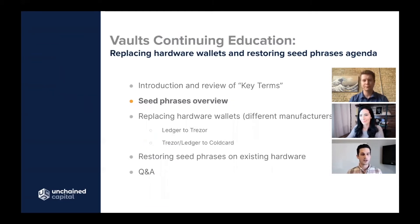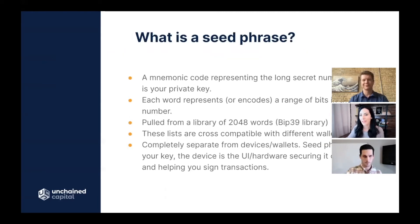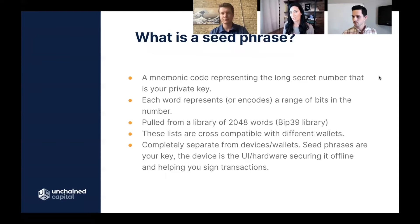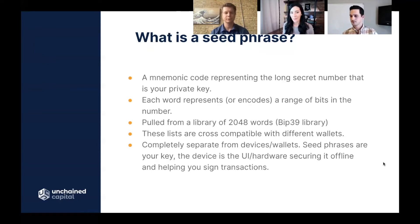Now I'll hand it over to Justine for a high-level seed phrase overview. Seed phrases are kind of magical. Essentially a seed phrase is a code or algorithm representing your long secret number — your Bitcoin private key. Each word encodes a range of bits in that number, pulled from a library of 2,048 words known as the BIP-39 library that you can look up yourself. These word lists are cross-compatible with different wallets and completely separate from the devices and wallets themselves.